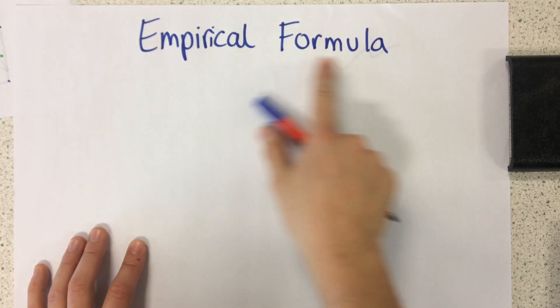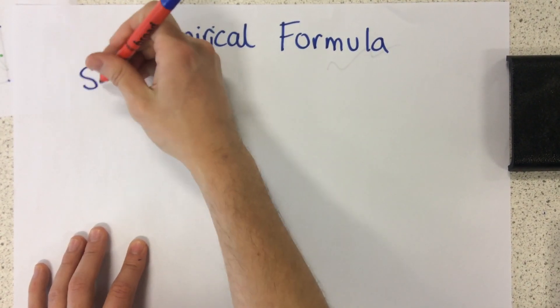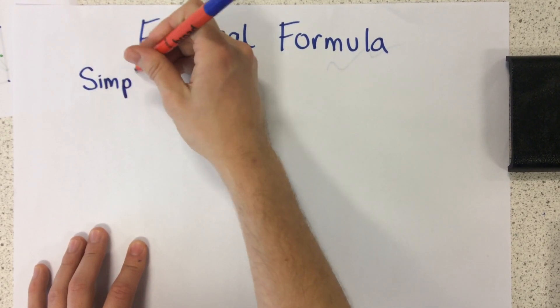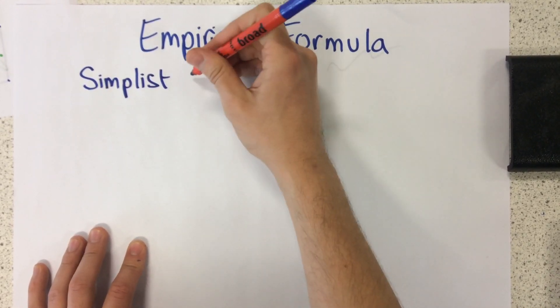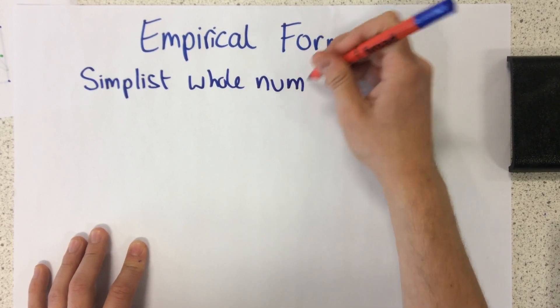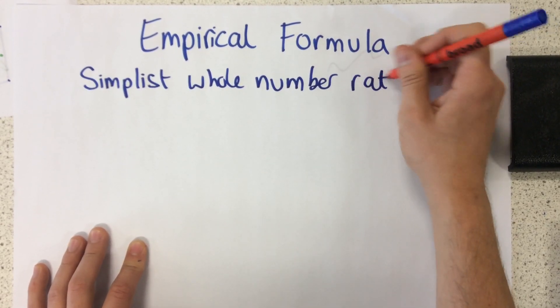Okay, today I'm going to talk to you about empirical formula. What empirical formula basically means is the simplest whole number ratio of atoms in a compound.